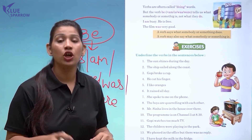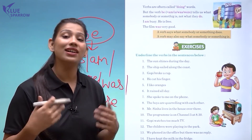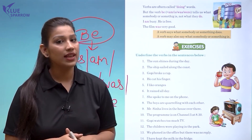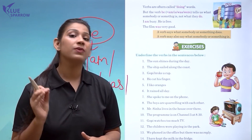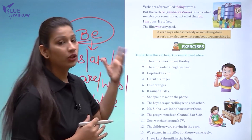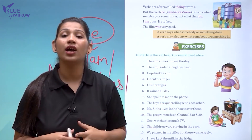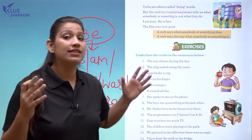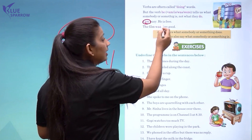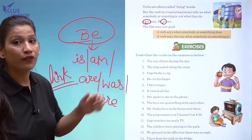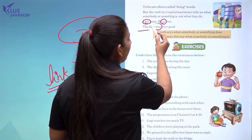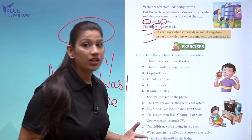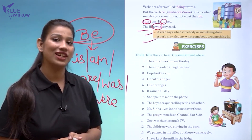Be-form verbs do not tell the immediate action being performed by the subject. For example, 'I am busy' and 'He is free' — no action is being performed; instead, 'am' and 'is' tell us what somebody is. 'The film was very good' — this also describes what the film was like. So a verb says what somebody or something does, and a verb may also say what somebody or something is. That's all students for today's session.